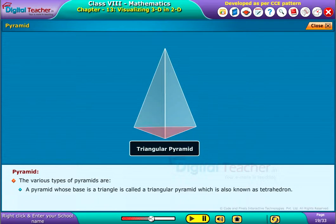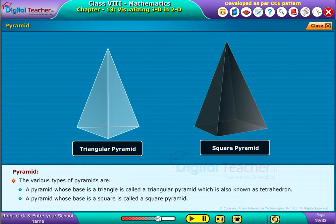A pyramid whose base is a triangle is called a triangular pyramid, which is also known as a tetrahedron.